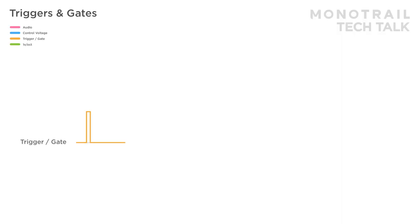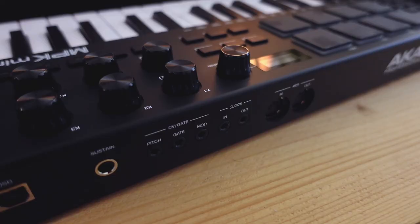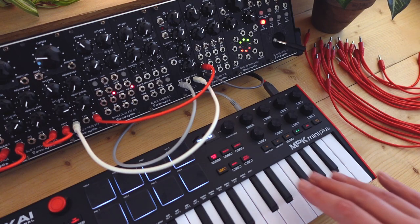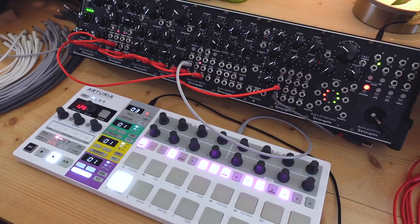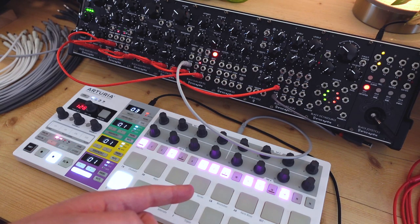Envelope generators need to be told when to generate a signal. In order to do so you need to send them a high positive voltage. A very short high positive voltage is called a trigger. A slightly or a lot longer high positive voltage is called a gate. So triggers and gates are essentially the same thing — a momentary high positive voltage. A gate is effectively a long trigger and a trigger a very short gate. A common way to create a gate is by using a CV keyboard with gate output; as long as you press a key the gate output will generate a high positive voltage. A common way to generate triggers is with a trigger sequencer, creating a short high voltage on each activated step.